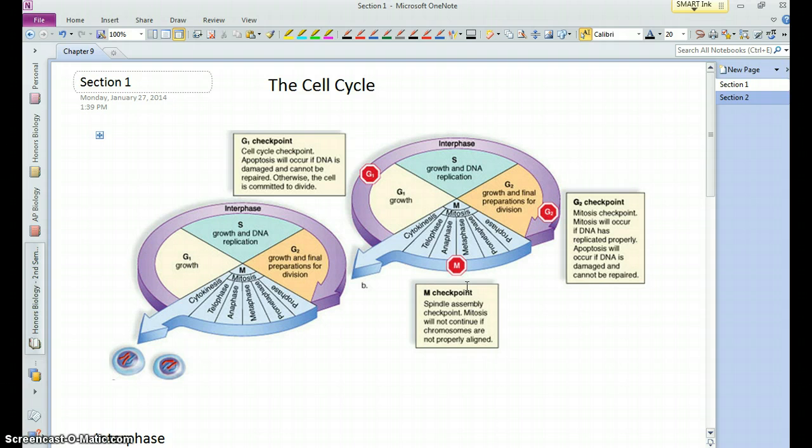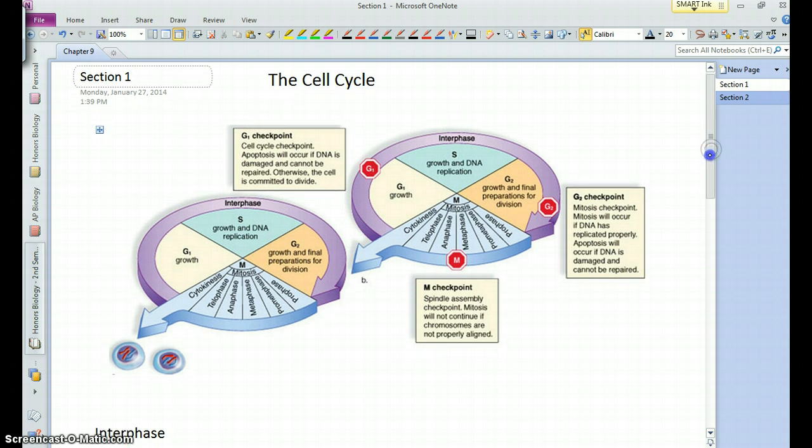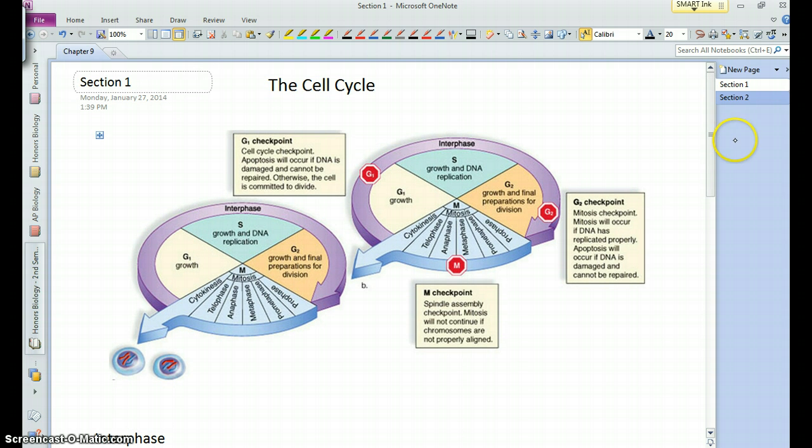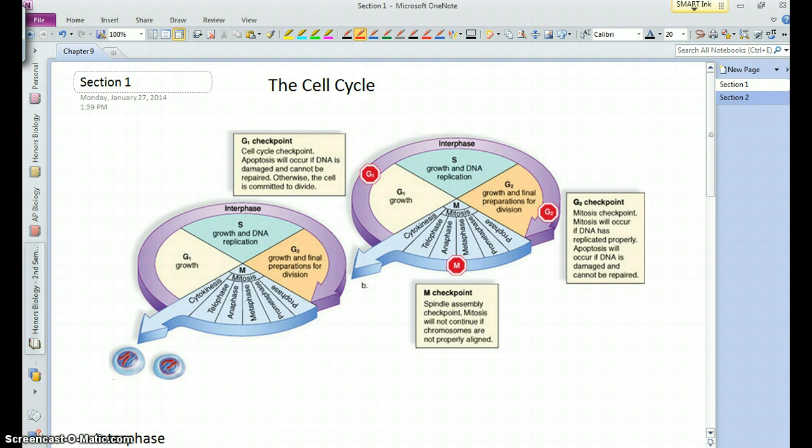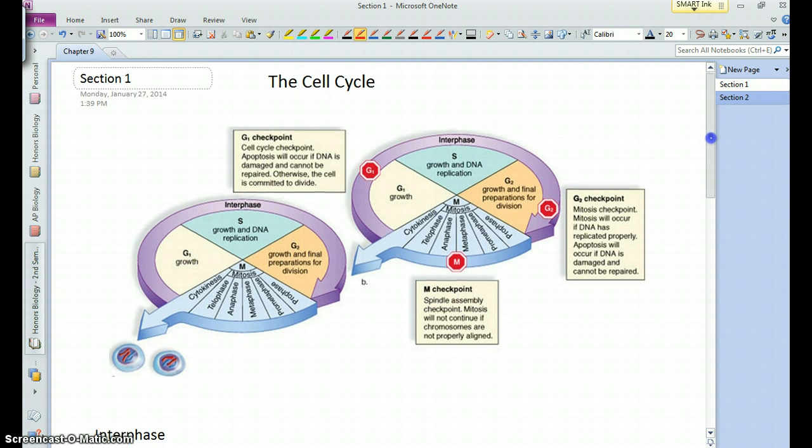Here we have an image of the cell cycle. The cell cycle is basically what cells go through after they are created, and they grow, and they prepare to divide, and then they divide. It encompasses all the things going on inside the cell, the steps that are necessary to get ready to divide again.